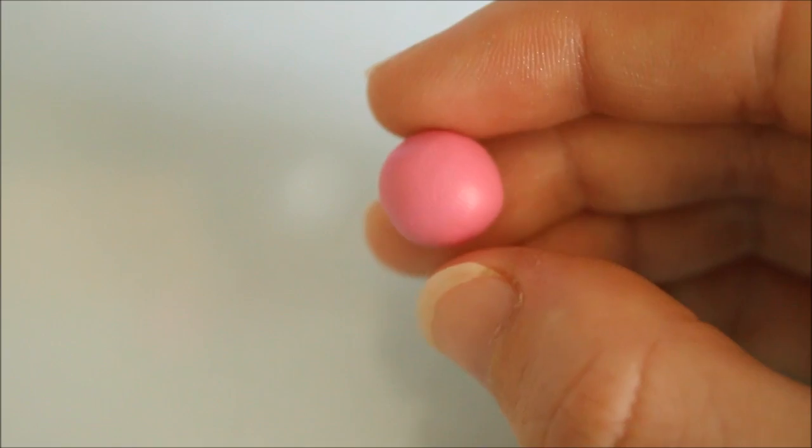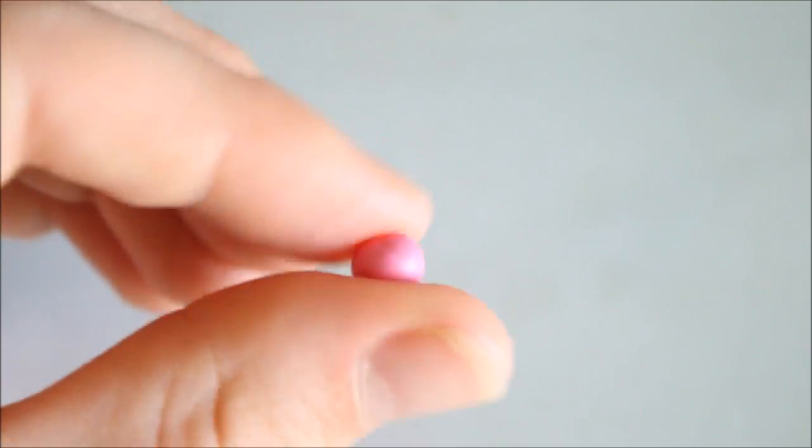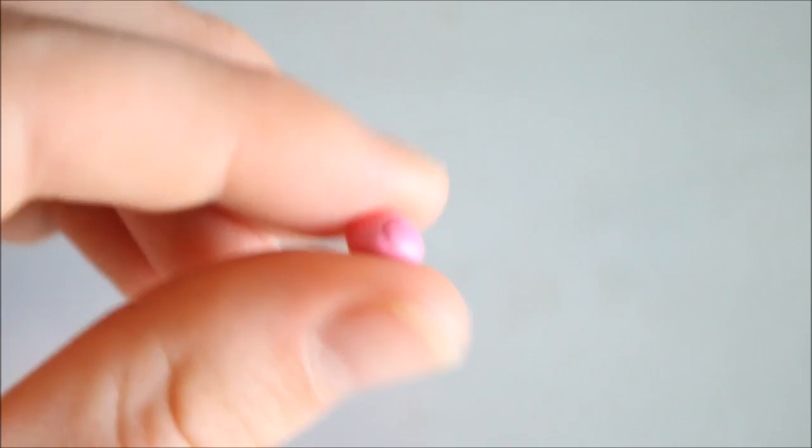For the yarn I'm using this pink color that I mixed. Take a section and roll it into a ball. We want it smaller than the actual size that the yarn will be.